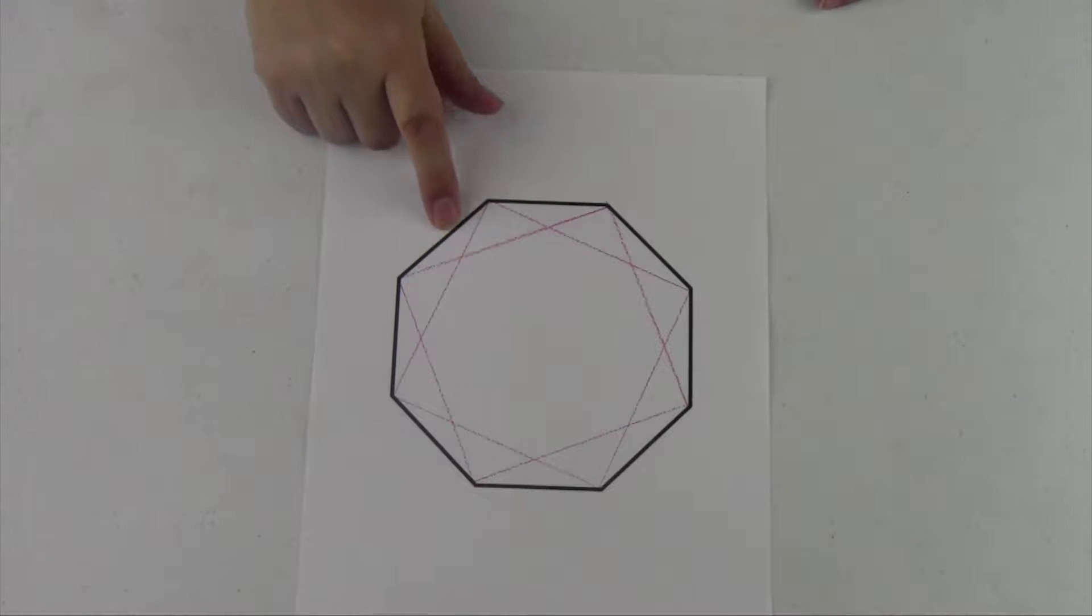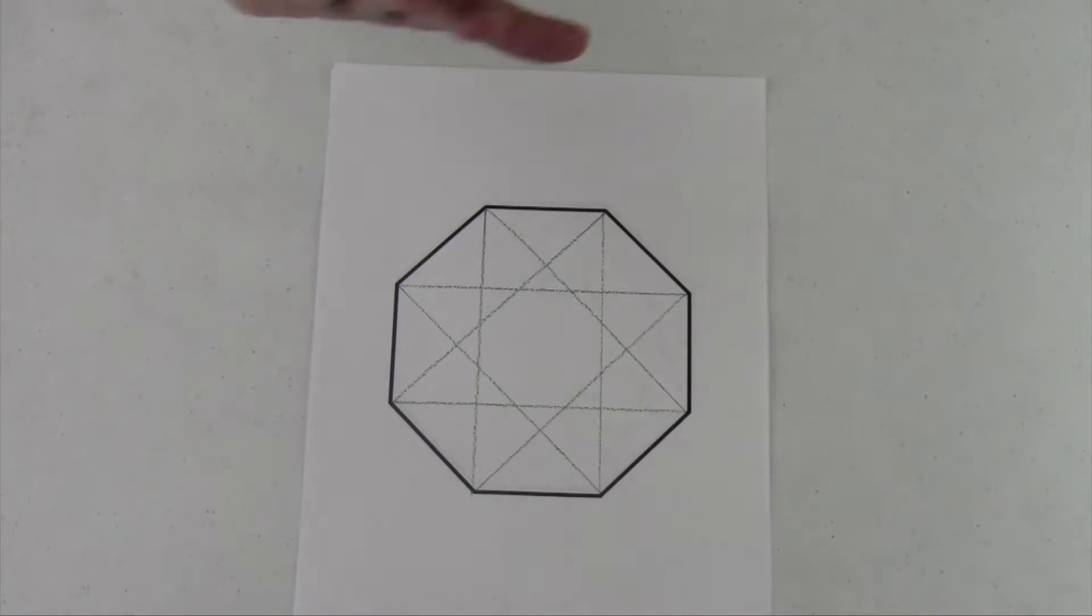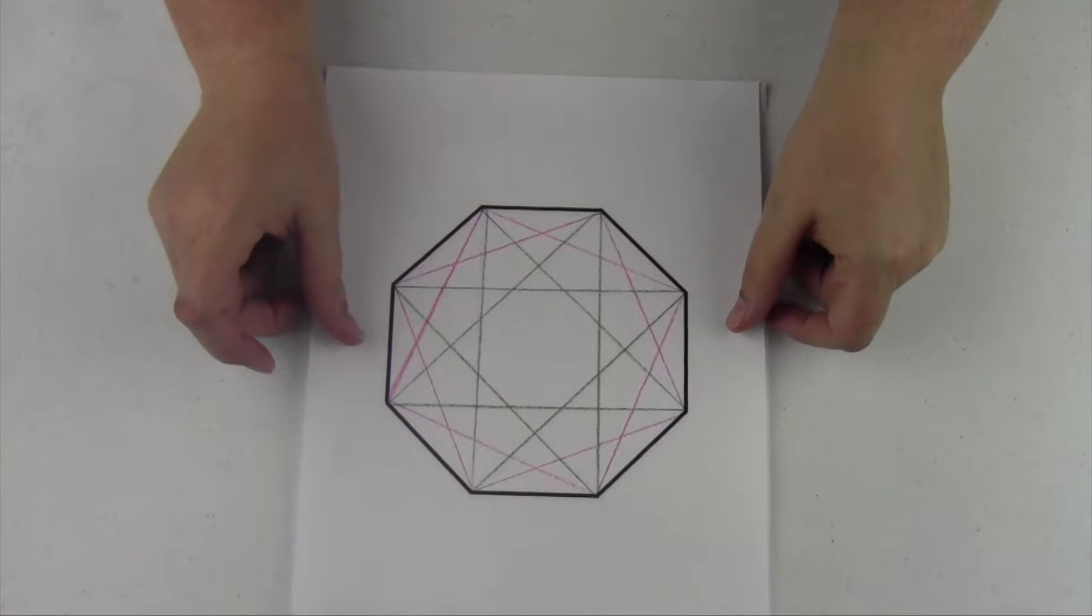This is an octagram within the octagon. This is the first one, and then here is the second one. You can overlap these and look at them through the window, or you can draw them with different colored pencils, but when you put them together, this is what you have.